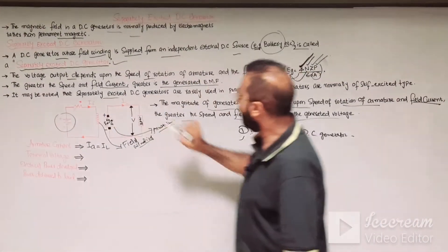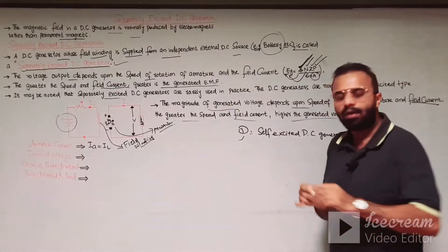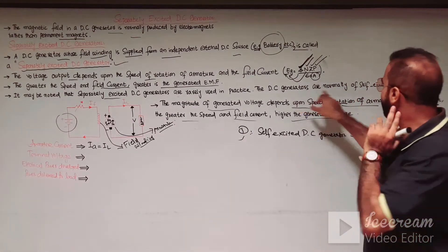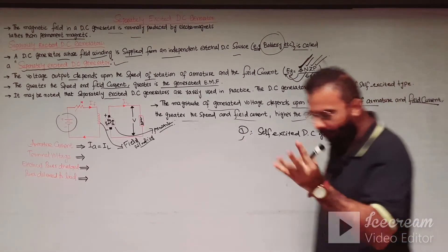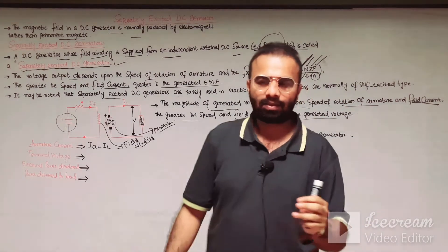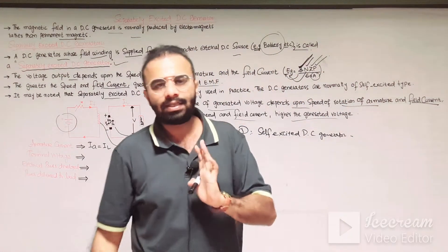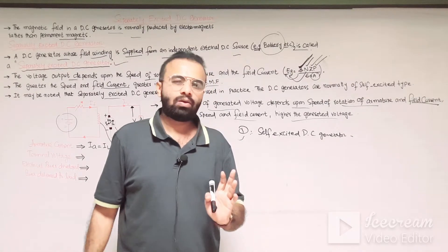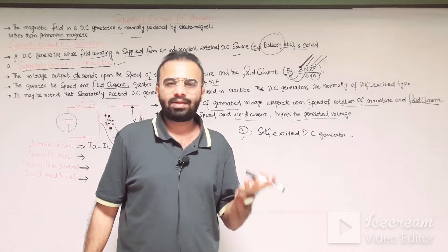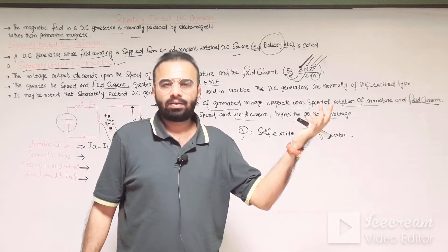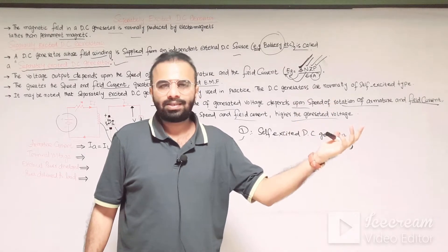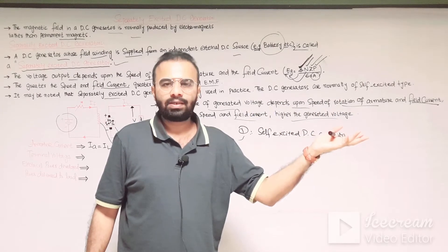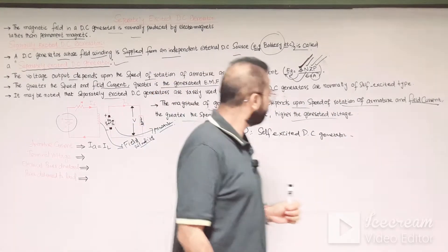It may be noted that separately excited DC generators are rarely used in practice. DC generators are normally of the self-excited type. There are three types of self-excited DC generator: the series-wound, shunt-wound, and compound-wound self-excited DC generator.